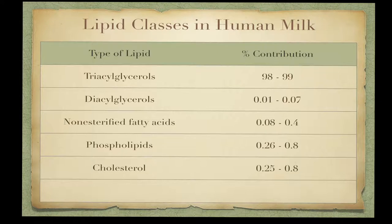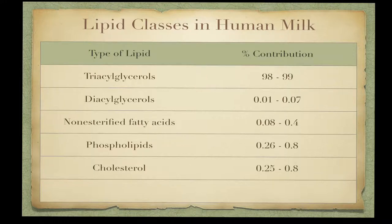The core is 98 to 99 percent triacylglycerol, with small amounts of monoacylglycerols, diacylglycerols, and non-esterified fatty acids, surrounded by the milk fat globule membrane. The membrane contains different phospholipids, esterified cholesterol, glycosylated polypeptides, filaments, mucins, lactadherin, and other components found in human milk.